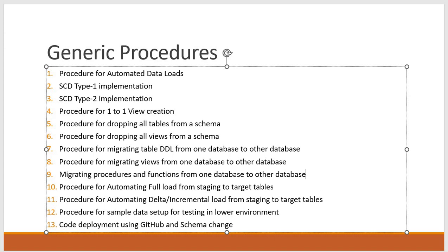Then I will explain a procedure for automating full load from staging to target tables. I hope you have some idea of what full load and delta load mean — if not, I will explain both with examples while covering these procedures, and show how to automate them using stored procedures.